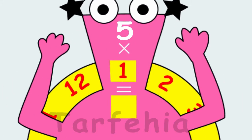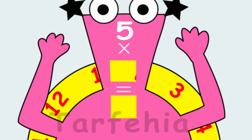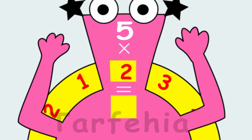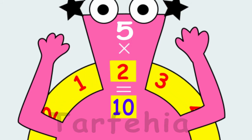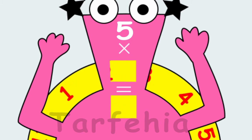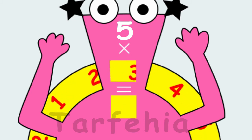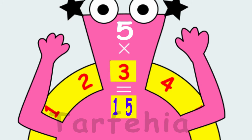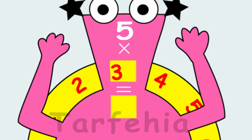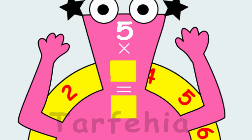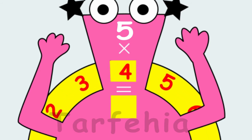5 times 1 equals 5. 5 times 2 equals 10. 5 times 3 equals 15. 5 times 4 equals 20.